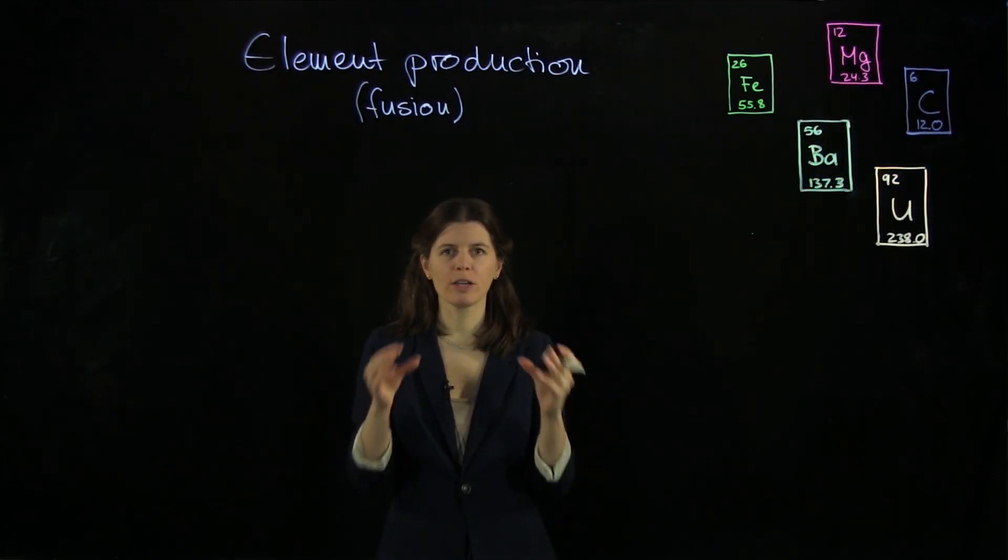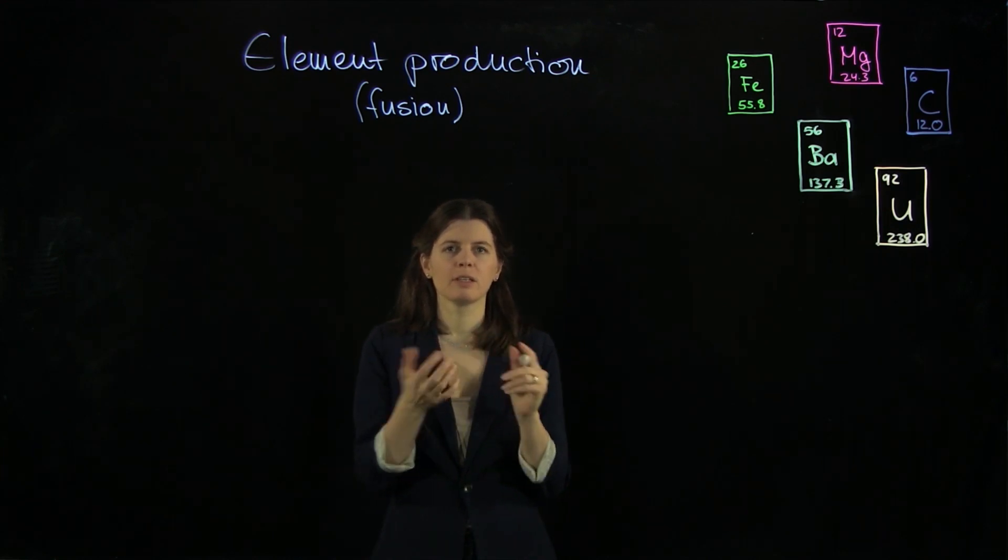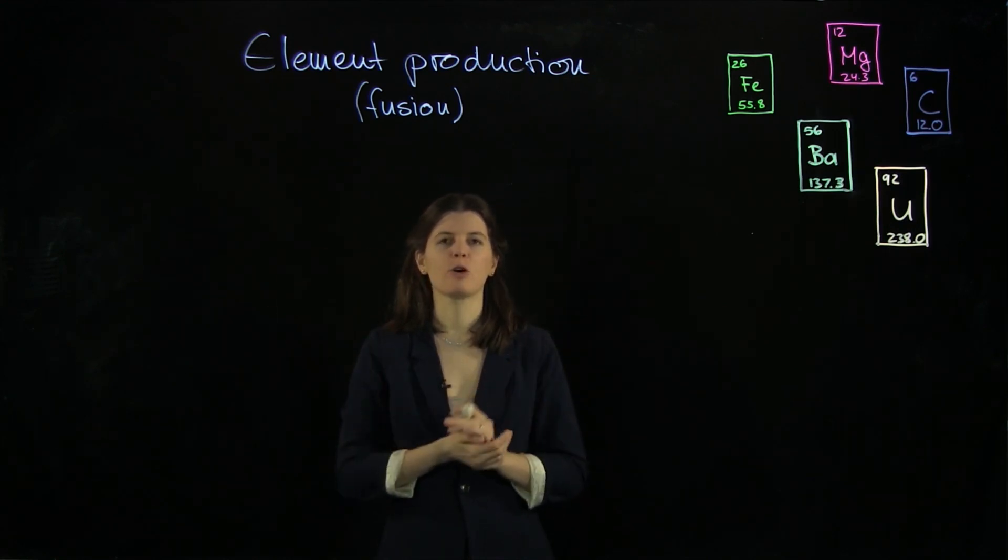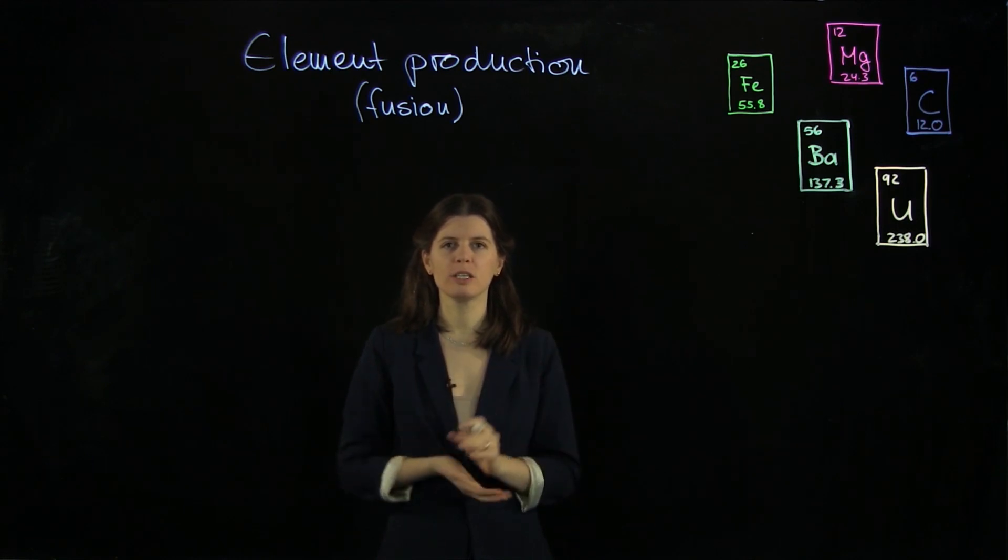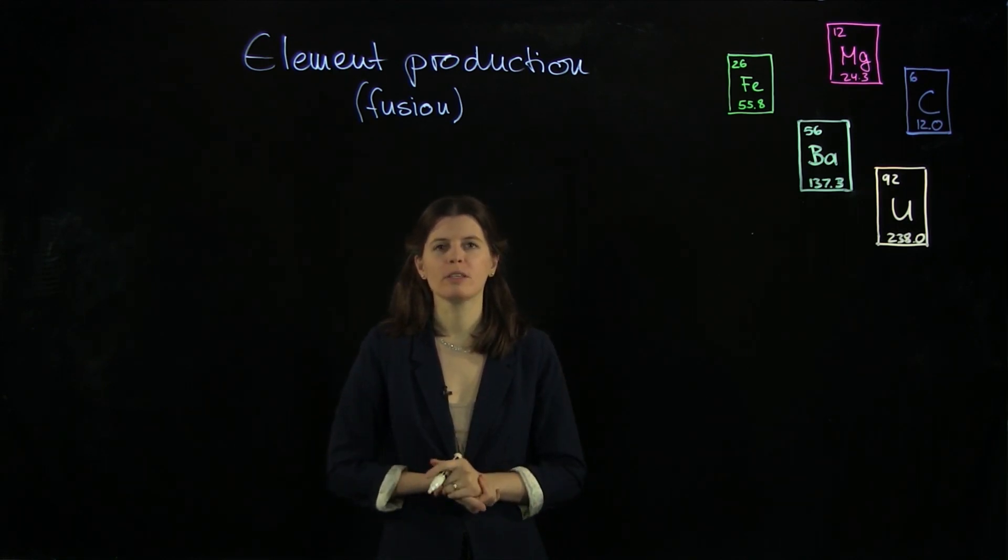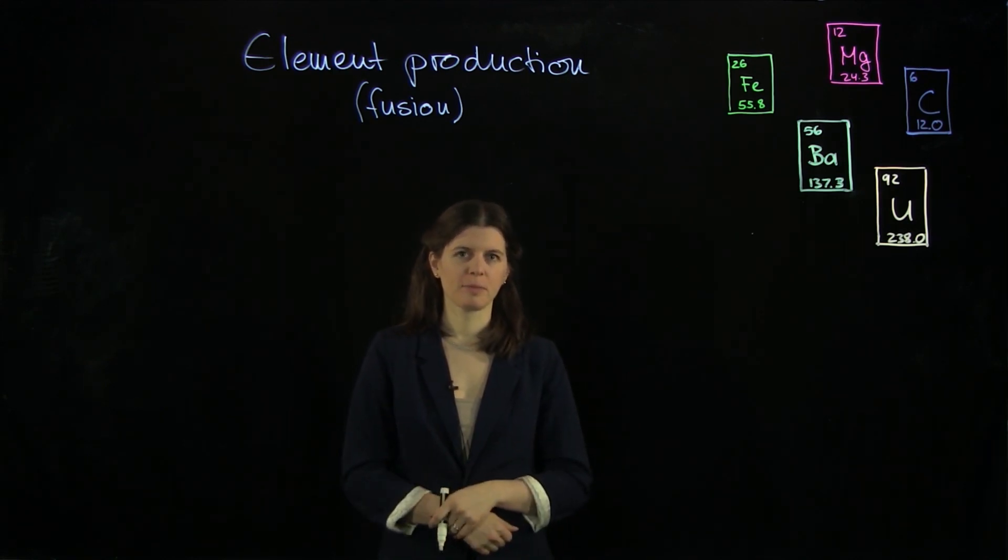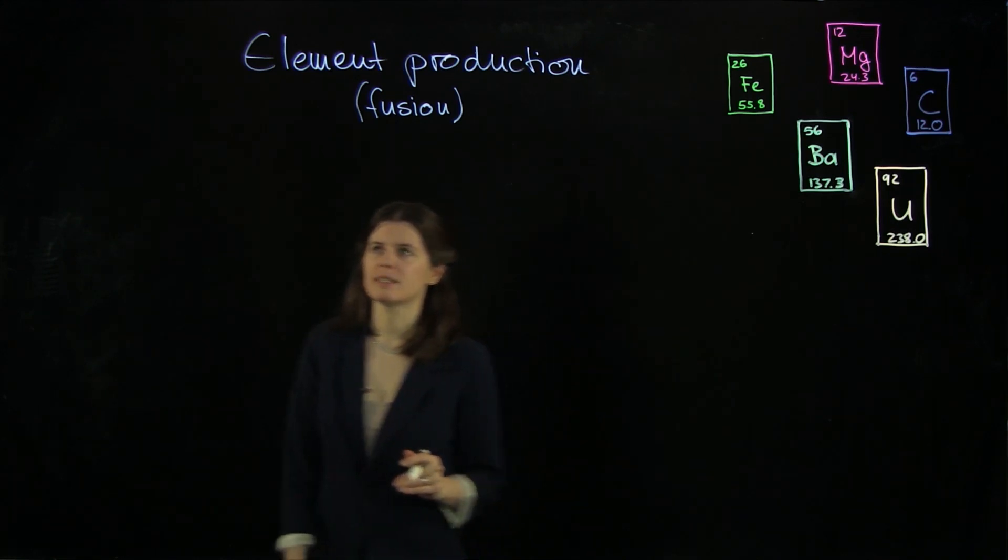Nuclear fusion is going on in the core of the sun. Hydrogen to helium gets converted there and that gives the sun enough energy to sustain its luminosity for billions of years. How does this work? Let's have a look.